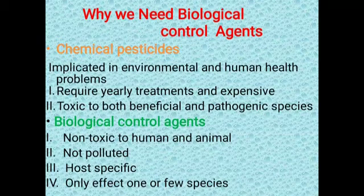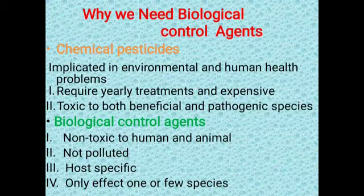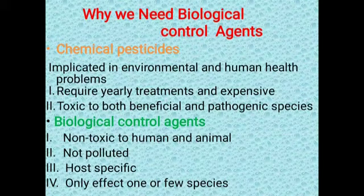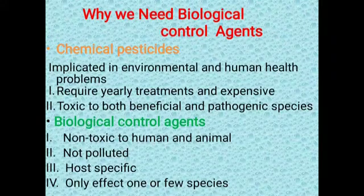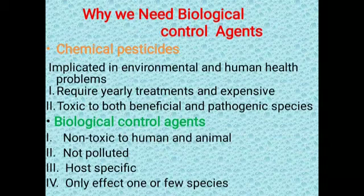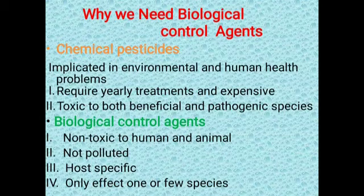Chemical pesticides are expensive and require regular treatment to seed and soil. In contrast, biological control agents involve no chemicals, so they are not toxic to humans and animals. They do not cause any kind of pollution — unlike chemical pesticides which cause soil, water, or air pollution. Biocontrol agents are host-specific, meaning they kill only the harmful pathogen and do not harm beneficial microorganisms present in soil.